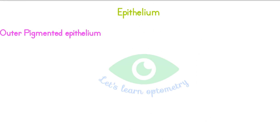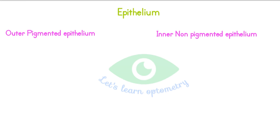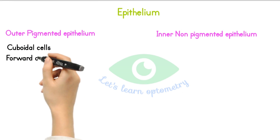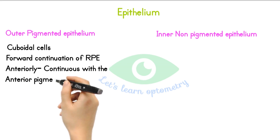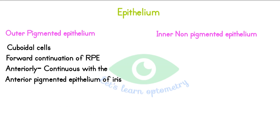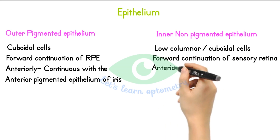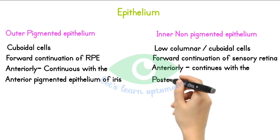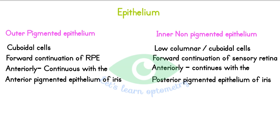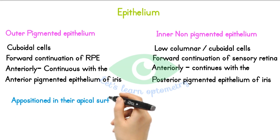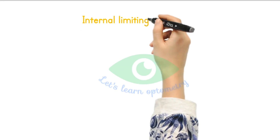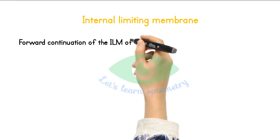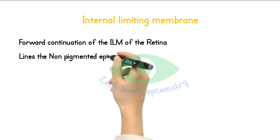Ciliary epithelium has two layers: the outer pigmented and the inner non-pigmented. The outer pigmented epithelium is composed of cuboidal cells and is the forward continuation of the retinal pigment epithelium. Anteriorly, it is continuous with the anterior pigment epithelium of the iris. The inner non-pigmented epithelium is composed of low columnar or cuboidal cells and is the forward continuation of the neurosensory retina. Anteriorly, it is continuous with the posterior pigment epithelium of the iris. These two layers are apposed at their apical surfaces, connected by intercellular junctions, desmosomes, and tight junctions. The internal limiting membrane is the forward continuation of the internal limiting membrane of the retina, and it lines the non-pigmented epithelial layer.